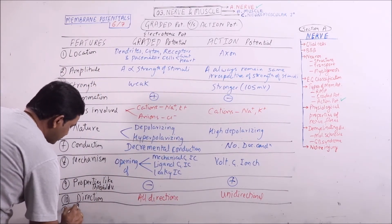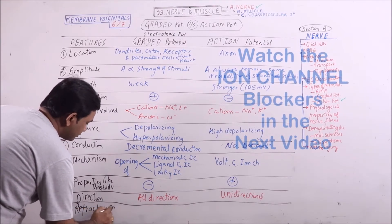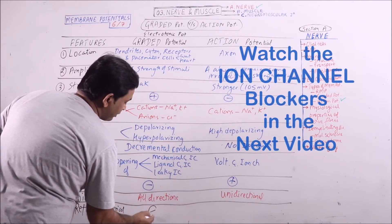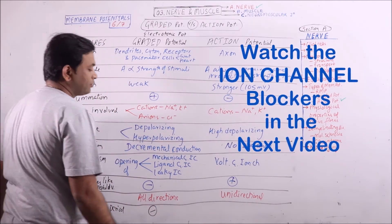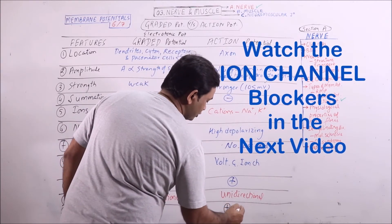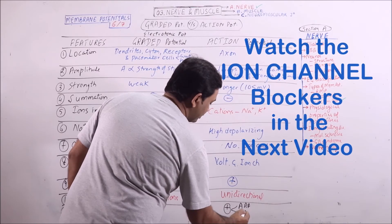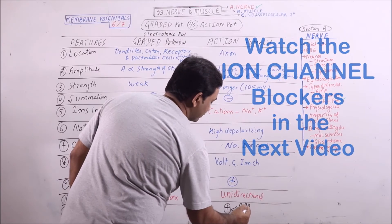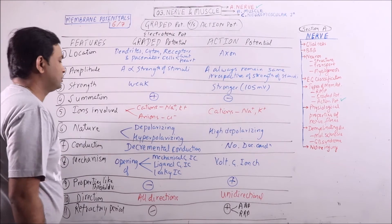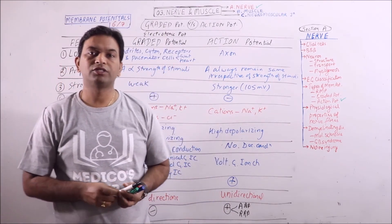The last point is the refractory period. There is no refractory period in graded potential, but in action potential there is a refractory period, which is of two types: absolute refractory period and relative refractory period. These are the various points of comparison between graded potential and action potential.